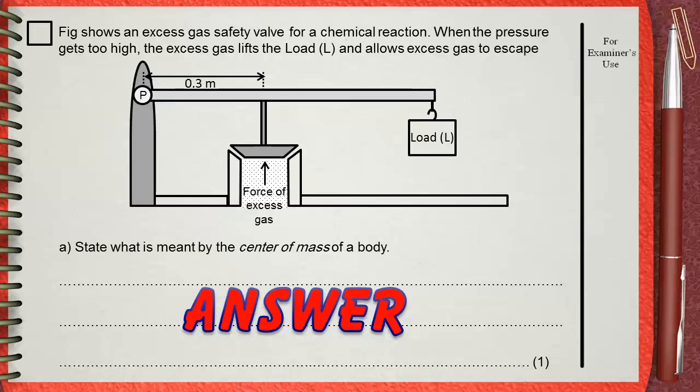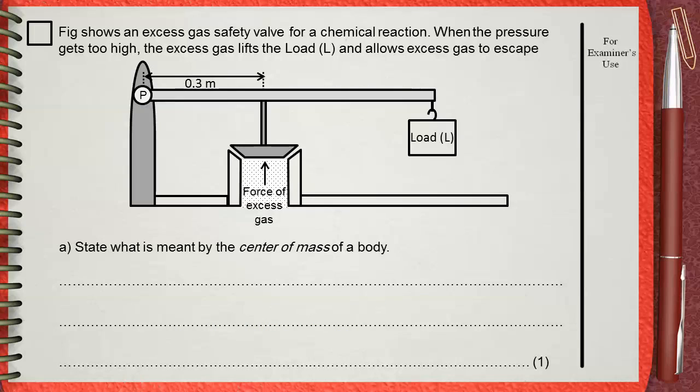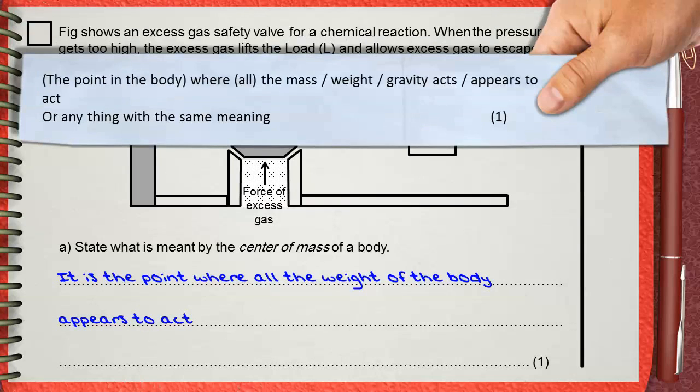A direct definition: the center of mass of the body is the point where all the weight of the body appears to act. The mark scheme awards the mark for the point in the body where all the mass, you can say instead of mass weight or gravity, acts or appears to act.